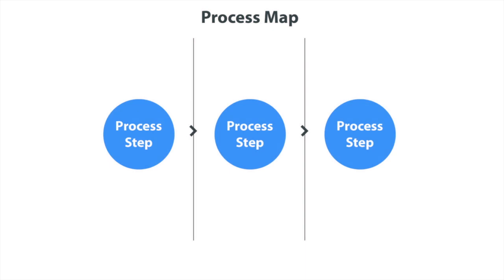Here are five steps to guide you in creating a process map. First, identify the steps in the process, otherwise called your process steps. Remember to walk your process and gather data on how much, how many, and/or how long.